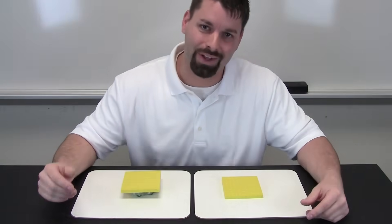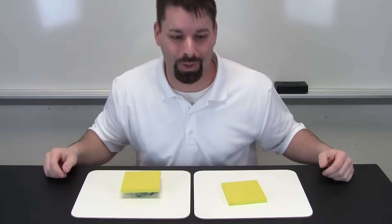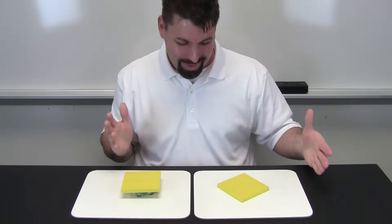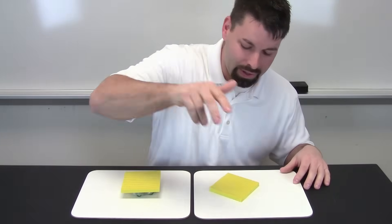Friction is all around us, not just on sliding boards. Take a look at this. I have two pieces of plastic. I am going to try and spin both of them. Why did it stop spinning? The friction slowed the block down and stopped it from spinning.